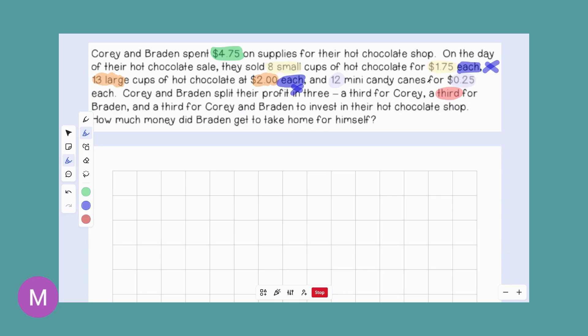And then same thing, 12 for $0.25 each. So same thing here. Then we see another keyword, split their profit. And they even tell you how many they split it into. They split it into three or into thirds. So splitting the profit and we know that they're going to be splitting it equally into thirds because they told us. And so that is division.